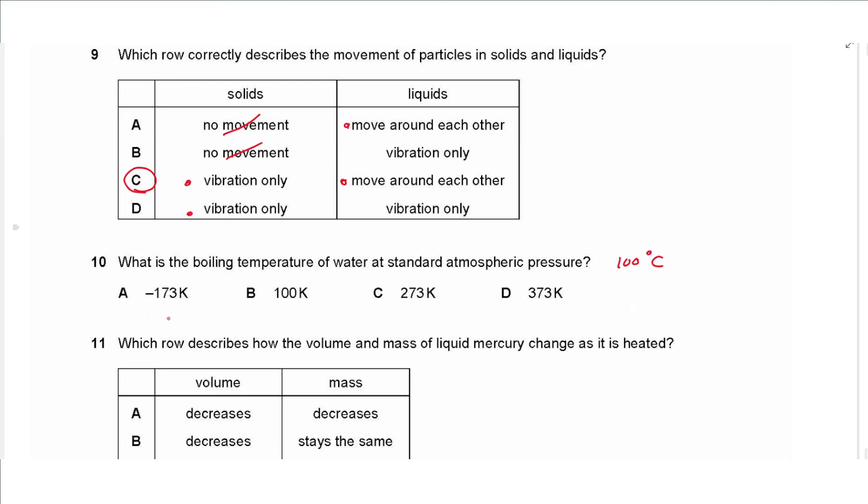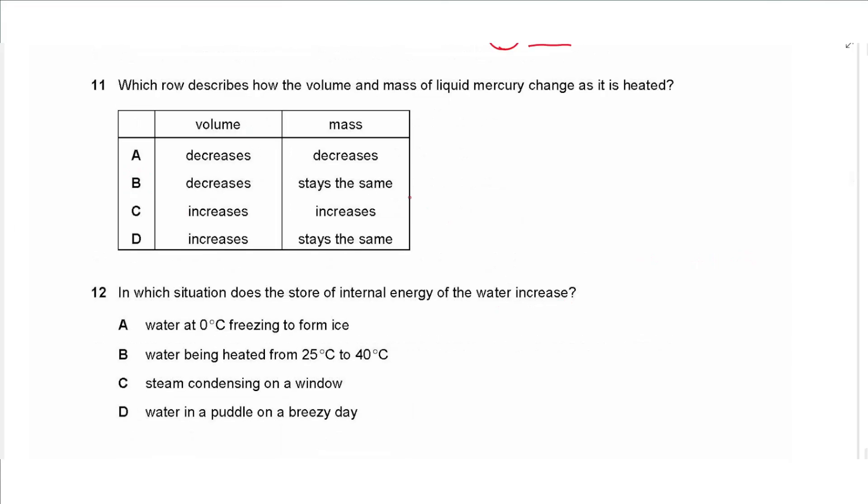Question 10 says what is the boiling temperature of water at standard atmospheric pressure. So it's 100 degrees Celsius but all the answers are in Kelvin, so we need to add 273 to get that in Kelvin. That will give an answer of 373 Kelvin, so we choose D.